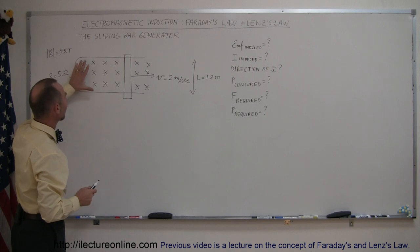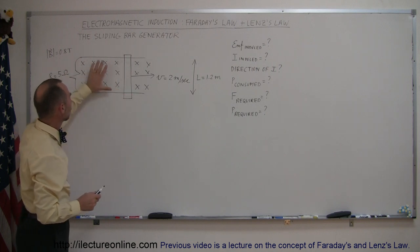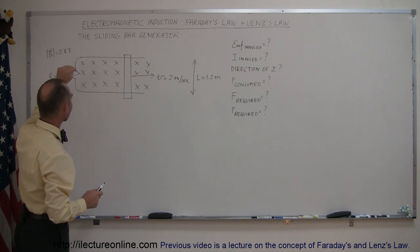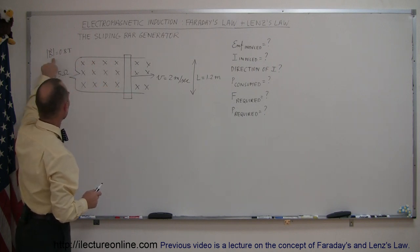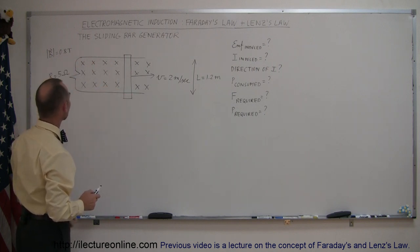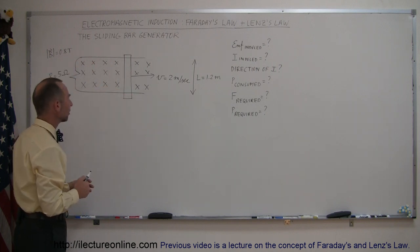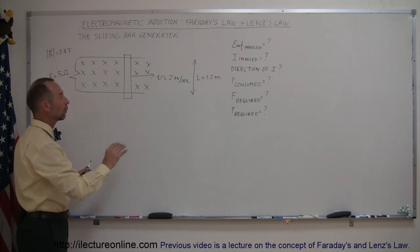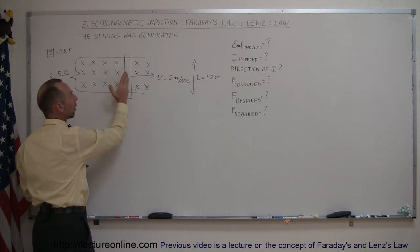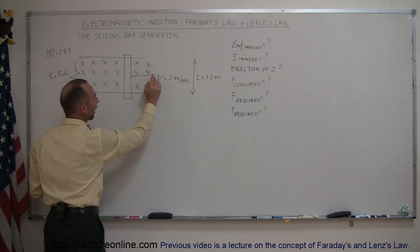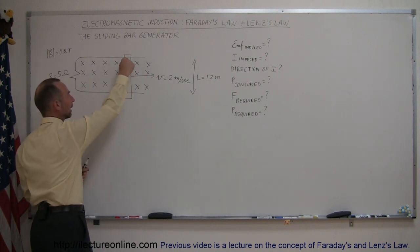There is a magnetic field through this loop directed into the board. The strength of the magnetic field is 0.8 teslas and we're going to move the bar to the right at 2 meters per second.